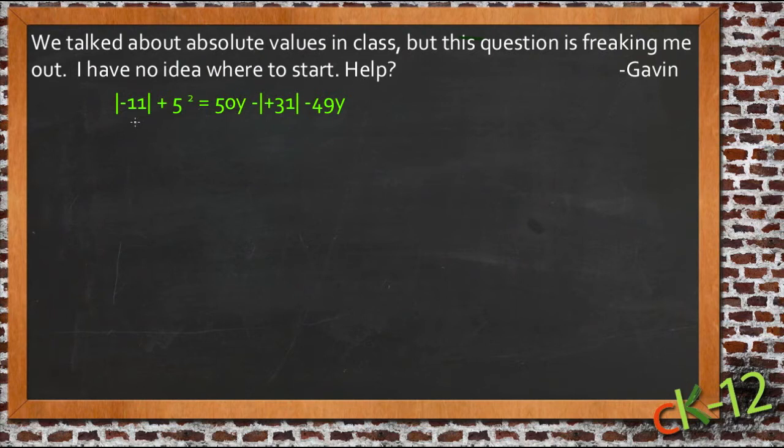So here's the equation he has. The absolute value of negative 11 plus 5 squared equals 50y minus the absolute value of positive 31 minus 49y.